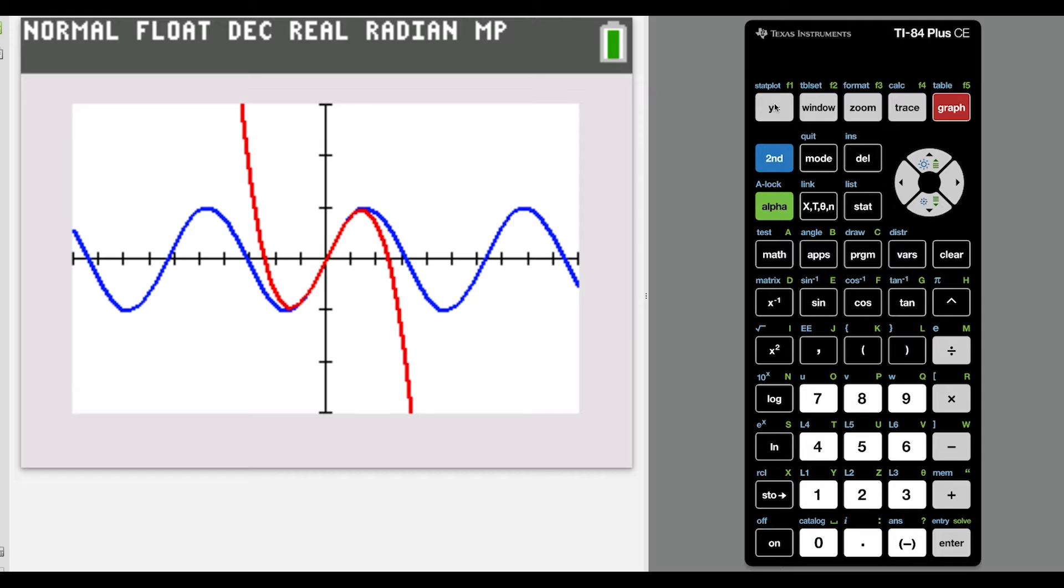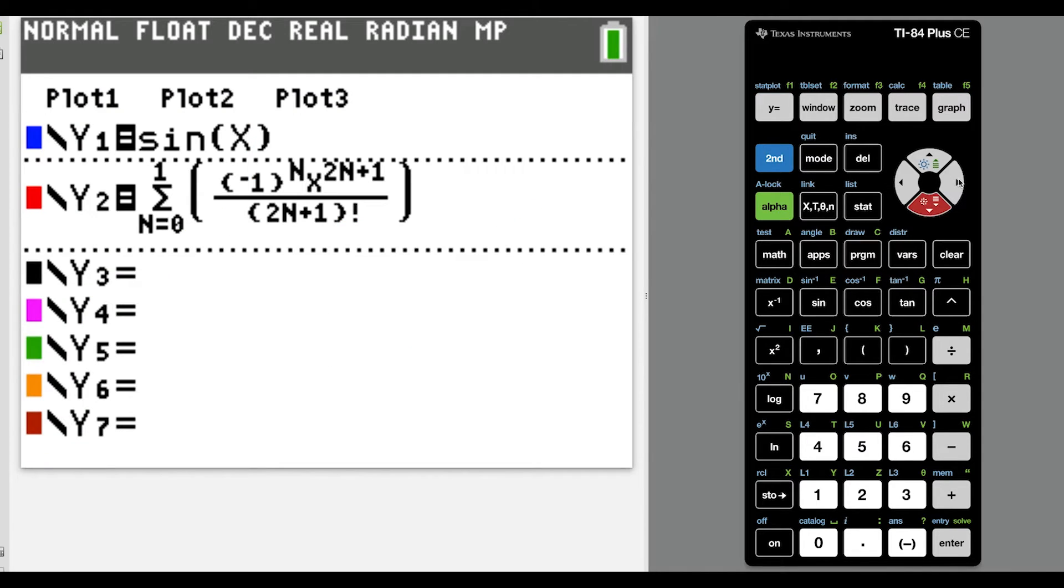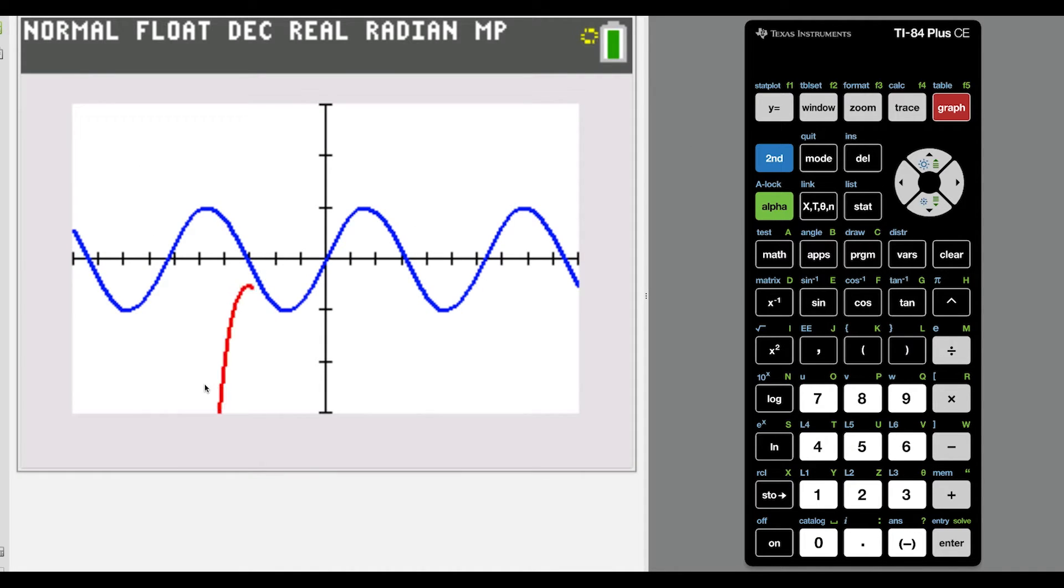I believe the last one we looked at was x to the fifth, which would be the result of plugging in n equals 2 at the top. So you can see here, if we go out to n equals 2, this was the last one we left off at.